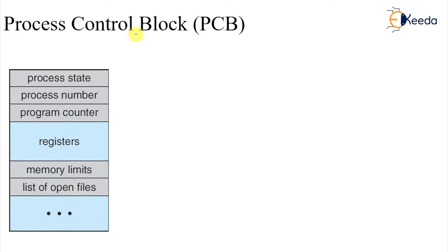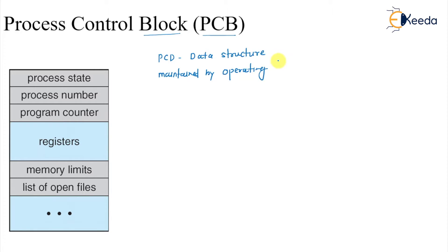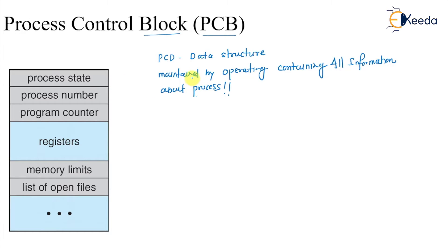Welcome. To understand context switching we have to understand a term called PCB — a Process Control Block. A PCB is a data structure maintained by the operating system containing all information about a process. Everything related to the process is contained in this data structure called the Process Control Block.